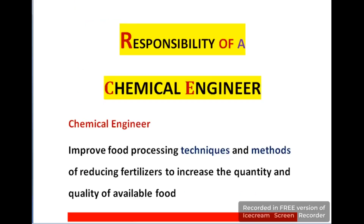This is our second headline: the responsibilities of a chemical engineer. In the field of food processing, a chemical engineer improves food processing techniques and methods. They try to reduce the use of fertilizers while increasing the quantity and quality of food.